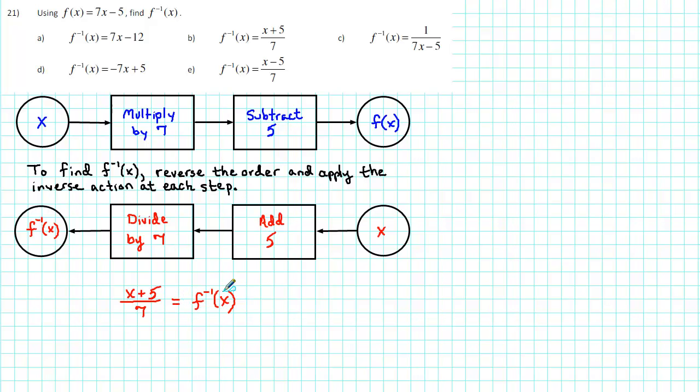So f inverse of x is equal to x plus 5 over 7. We see that b is the correct answer.